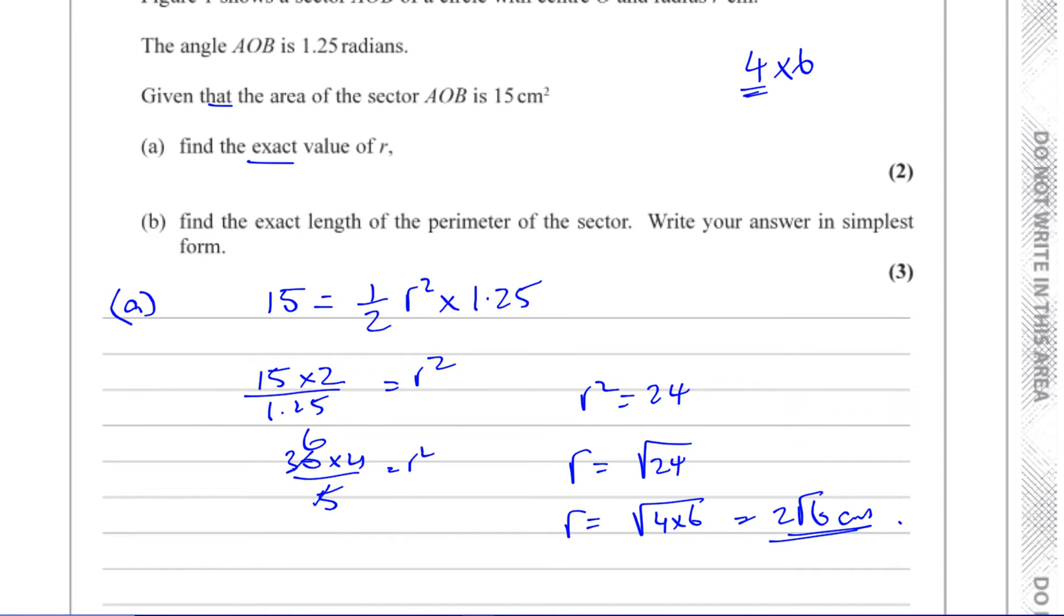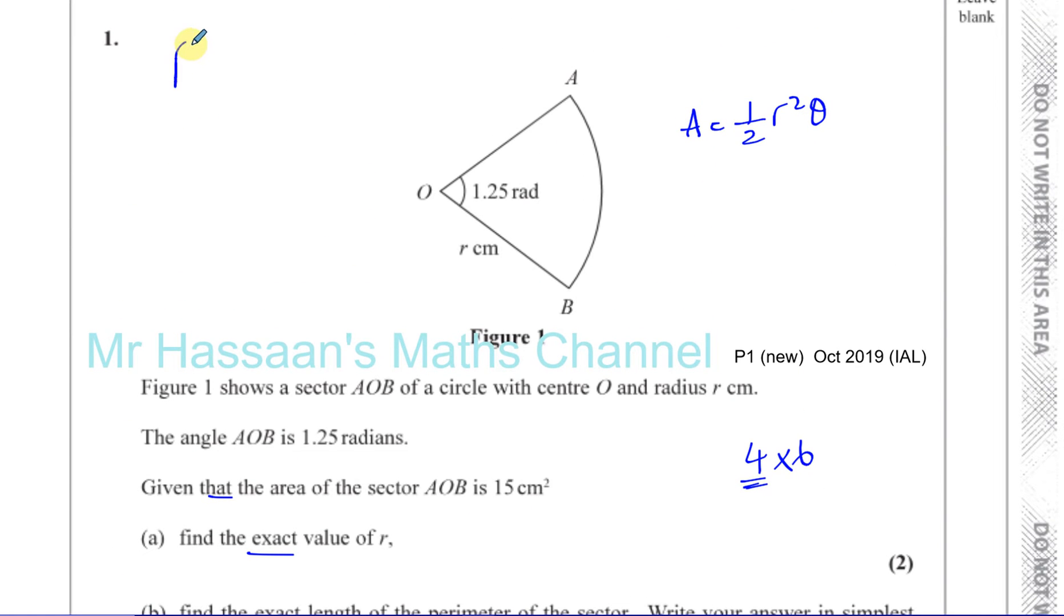Then it says part B, find the exact length of the perimeter of the sector. Now the perimeter of a sector is given by these two radiuses, two radii, and the length of this arc. It's not just the length of the arc. The perimeter of a shape is the length of the outline which encloses the shape. So it's going to be L plus two times R. So you've got to, because there's two radiuses here, right? So we already found what R is. So first of all, also we're supposed to remember that the length of the arc, if the angle is given in radians, is given by R theta.